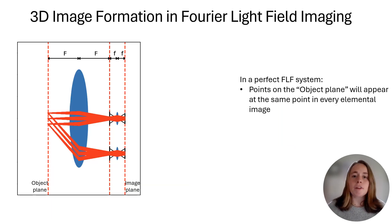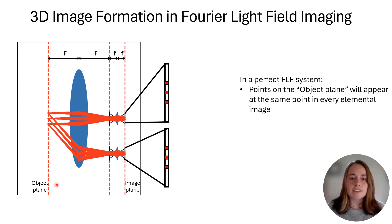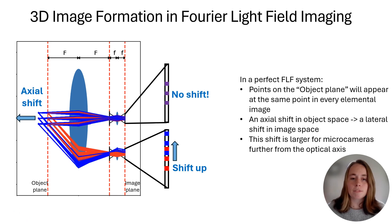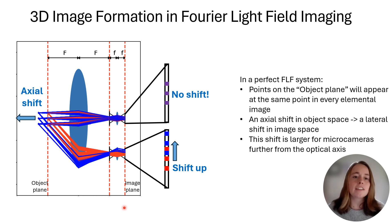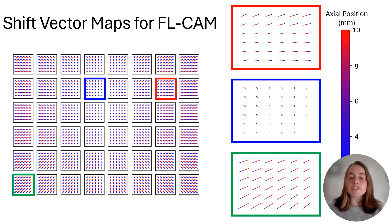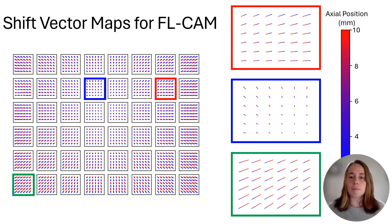Before I explain our 3D reconstruction algorithm, I want to return to this diagram and review how 3D information is encoded in a Fourier light field system. In a perfect system, points on the object plane will appear at the same point in every elemental image. Each of our micro cameras would theoretically form an identical image of a flat sample sitting on the object plane. But as a point in object space shifts axially, its image in each elemental image shifts laterally, and the magnitude of that shift varies according to how far the array lens is from the optical axis. The image of the point would not shift at all for a lens centered on the optical axis, whereas we see a large lateral shift for a lens sitting further out. We can calibrate the FL cam by measuring these shift vectors across the full field of view for each of our 48 cameras. Backward and forward projection between object and image space is achieved simply by shifting the pixels in our acquired images according to these vector maps.